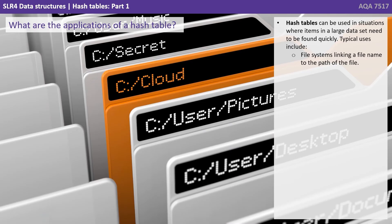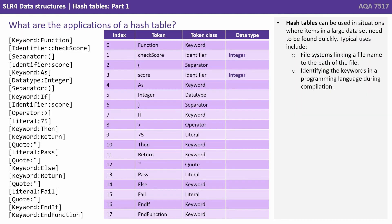So what are the applications of a hash table? Hash tables can be used in situations where items in a large dataset need to be found quickly. Typical uses include file systems linking a file name to the path of the file, or identifying the keywords in a programming language during compilation.